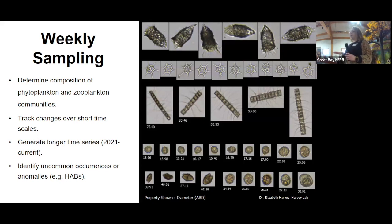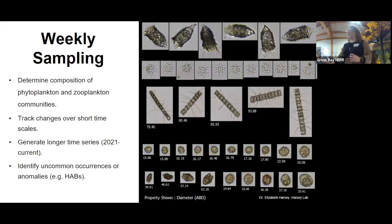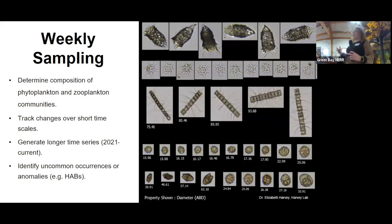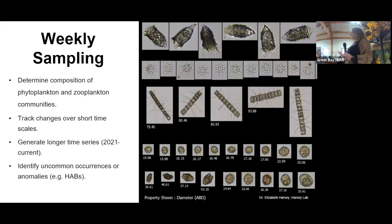This allows us to determine the composition of phytoplankton and zooplankton communities — we can run it through, see who is there, who we expect to be there, who maybe is not there. It also allows us to track changes over short periods of time. So if there's any sort of special events or any sort of species that may be in flux, we can see that as well. And it actually is allowing us to generate a longer time series of populations that are in the area.